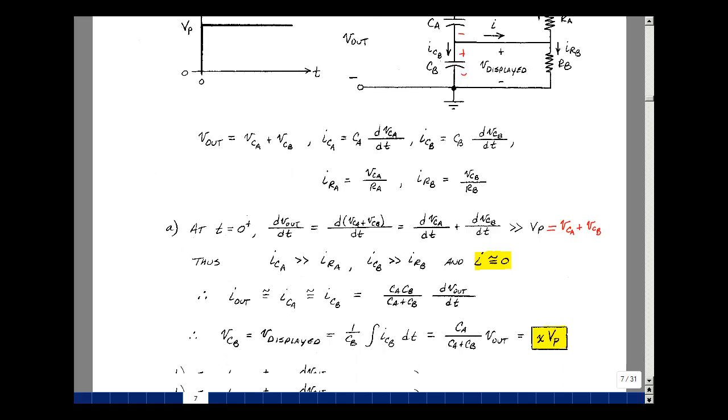Because it's not a function of time. And the c sub b's will cancel. And just left with c sub a over c sub a c sub b. Take the integral of dv out dt times dt. The dt's cancel, we're taking the integral of just one dv out.